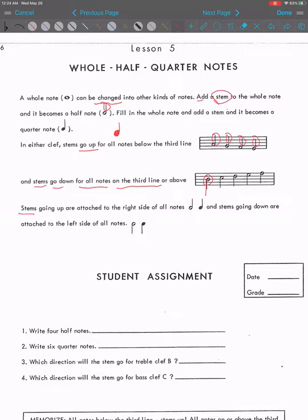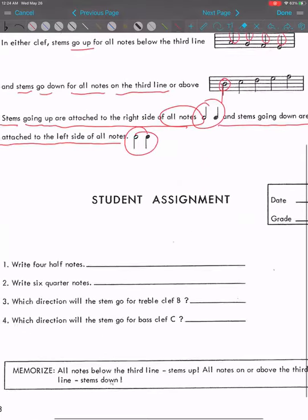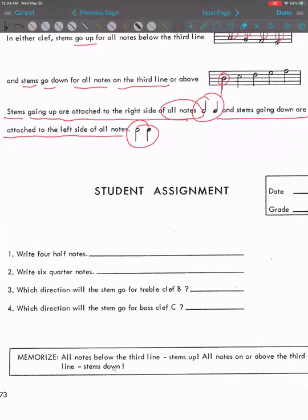Stems going up are attached to the right side of all notes, and stems going down are attached to the left side of all notes, just like that. All right, let's do some exercise. Write four half notes. So we're going to draw a note first and then put a stem on the right.